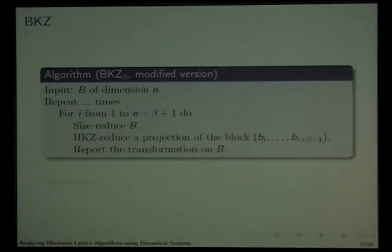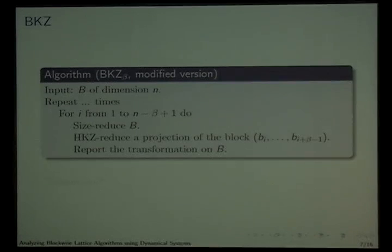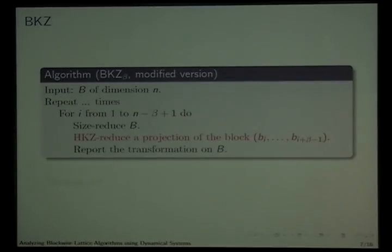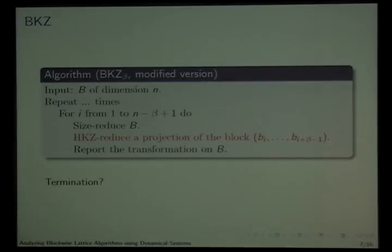What does the BKZ algorithm do? BKZ is just a loop, and at each step we do a small part of the reduction. During this step, the strong HKZ reduction algorithm is applied at most N times in small dimension beta. One step of BKZ takes time polynomial in N. The problem is how many times the small reduction step is applied. In the standard version of BKZ, it is applied until nothing occurs — until all HKZ reductions do nothing inside the loop. But it doesn't terminate with a known bound.